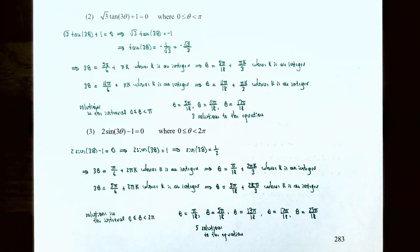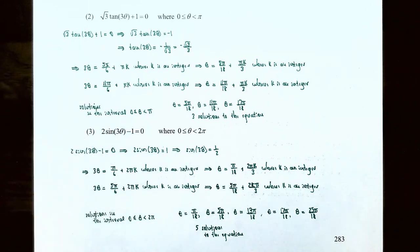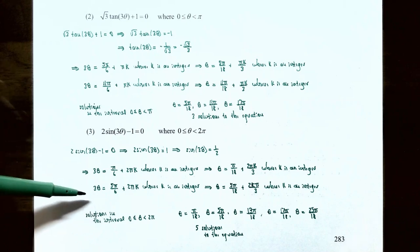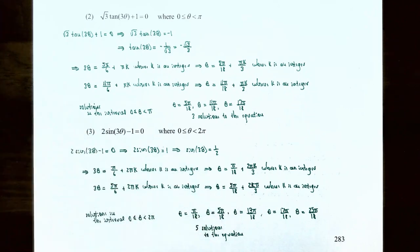Dividing both equations by three to solve for theta: pi over six divided by three gives pi over eighteen, and two pi k divided by three gives two pi k over three. So theta equals pi over eighteen plus two pi k over three. For the second equation, five pi over six divided by three gives five pi over eighteen plus two pi k over three. These are the general solutions to two times sine of three theta minus one equals zero.